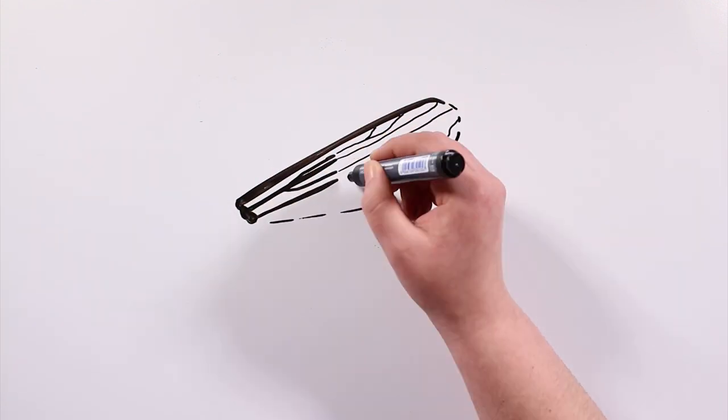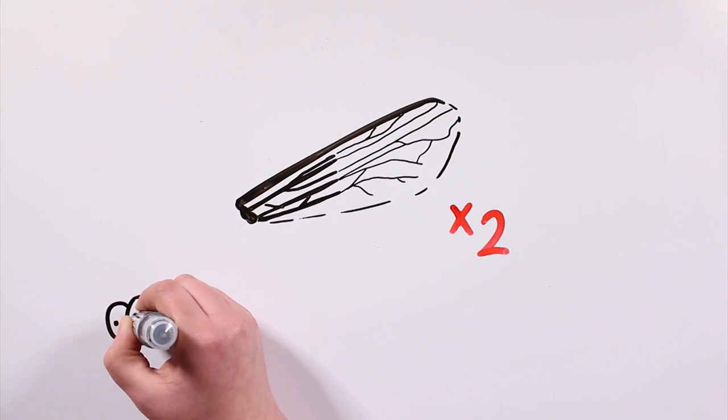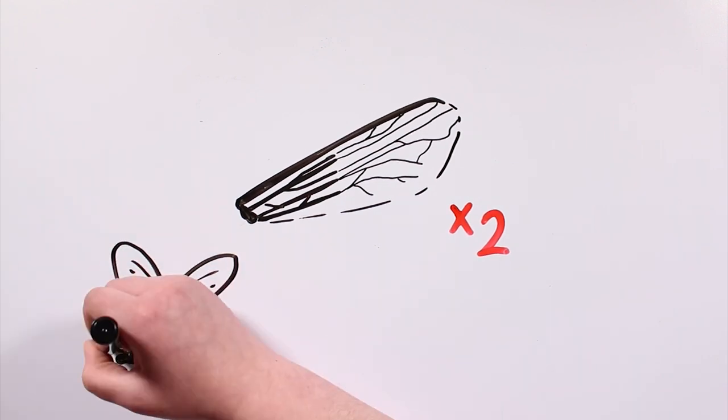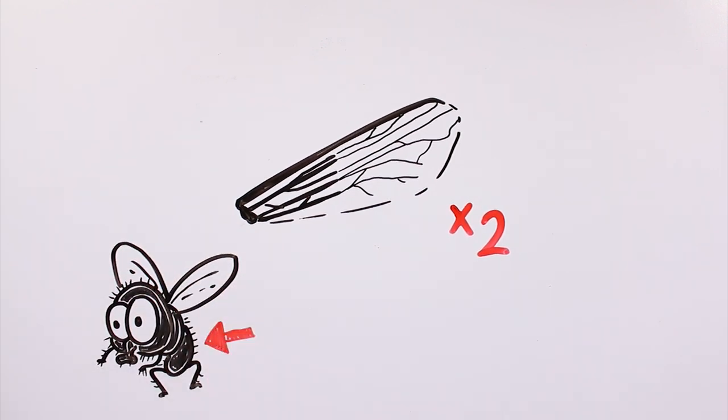Flies only have 2 wings, and their bodies are covered with sensory silk, which allows them to smell and taste without needing to approach things with their mouth.